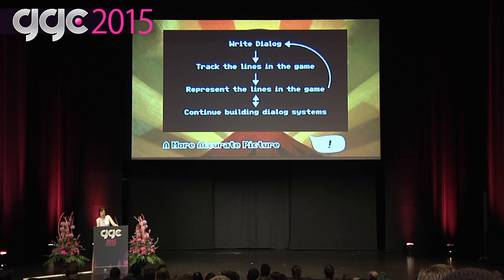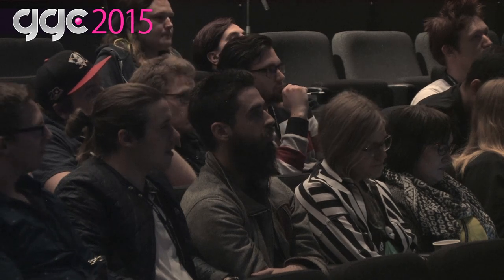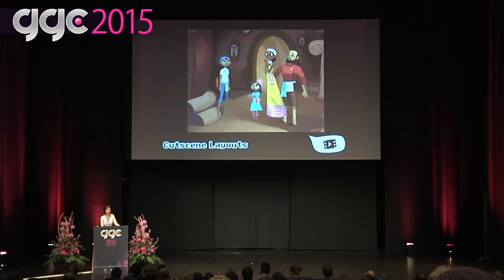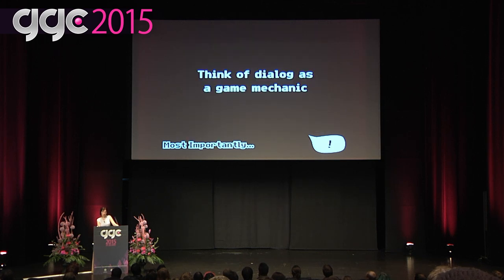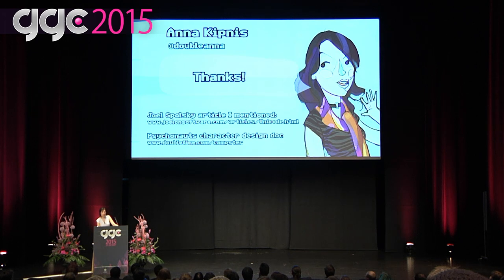If you decide to do voice dialogue, you'll need to beef up your entire pipeline to account for editing, tracking, and implementing voice lines. Get audio middleware to make it easier to do sound and make time in the schedule for your audio team to edit lines. Do scratch recording as early as possible to work out the kinks. If you have cutscenes, keep in mind animators won't be able to finalize everything until voice is in. Most importantly, think of dialogue as something integral to the core experience — like a game mechanic. If you plan to include dialogue, start thinking about how it will work as early as possible so the narrative comes together holistically with all other game mechanics.